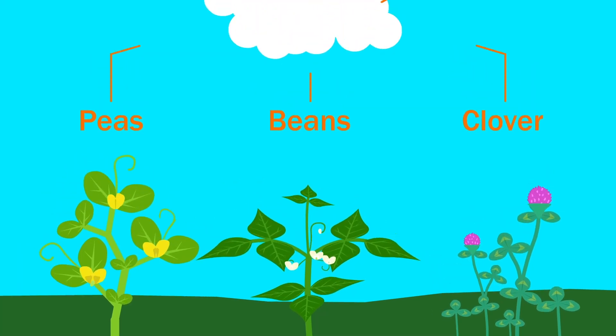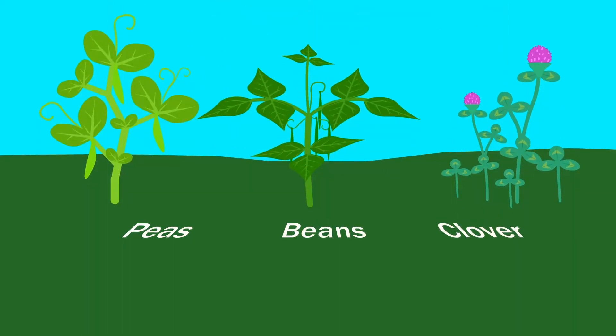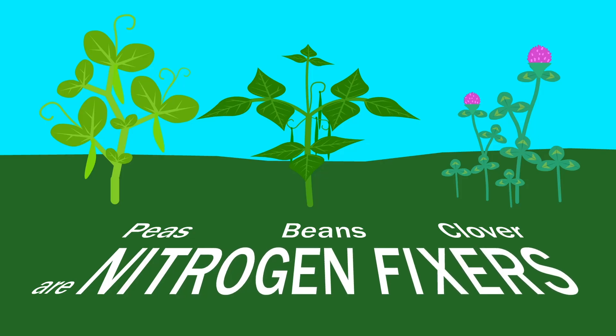Peas, beans, and clover are among the 18,000 species in the pea family. Most species in this family, including these three, are known as nitrogen fixers.